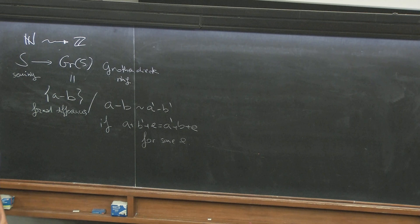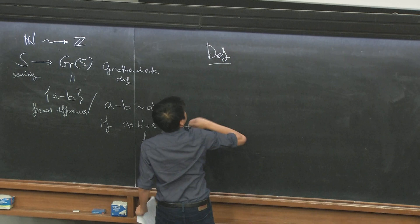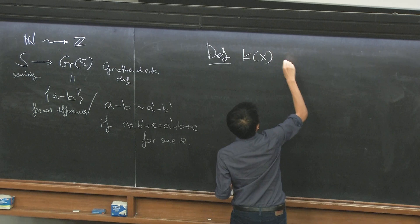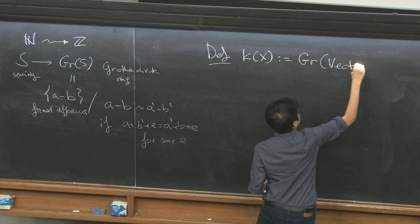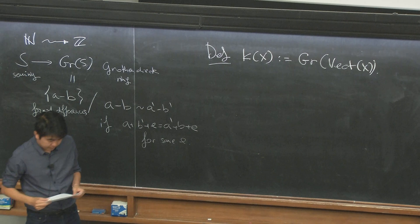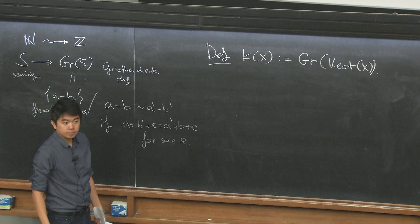By definition, the K-theory of X, K(X), is the Grothendieck ring associated to the semi-ring of isomorphism classes of vector bundles on X. This is a ring associated to your topological space.